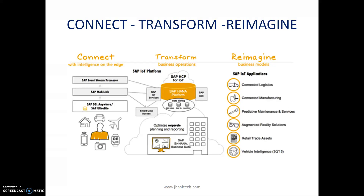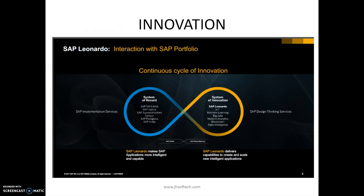SAP Leonardo can connect, transform, and reimagine. Connect means connecting with intelligence and on the edge — it can connect with any devices we can imagine. Transform means transforming business operations — you can operate any business device or process using SAP Leonardo. Reimagine refers to reimagining business models. SAP IoT applications include connected logistics, connected manufacturing, predictive maintenance, augmented reality solutions, retail trade, assets, and vehicle intelligence.